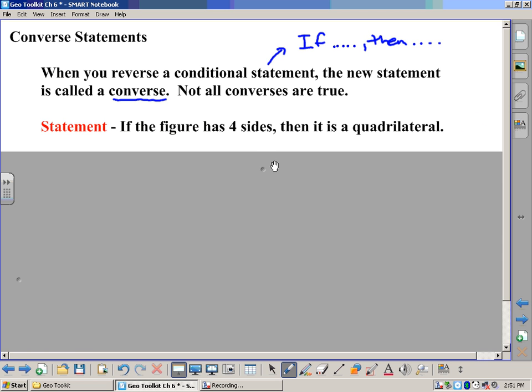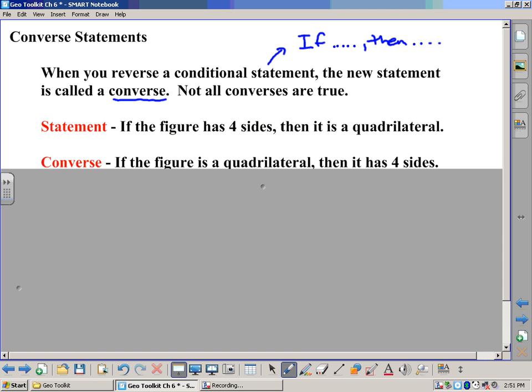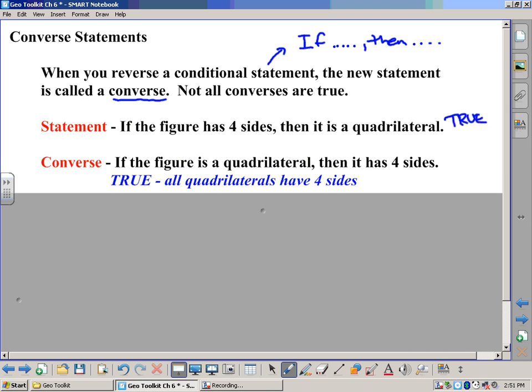So what if you reverse it? The converse would be: if the figure is a quadrilateral, then it has four sides. So the original statement is definitely true, but is the converse true? And the answer is yes, because all quadrilaterals have four sides. That's an example where both the original statement and the converse are true.